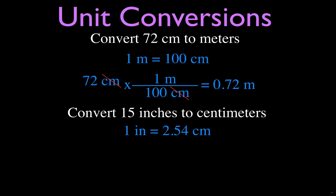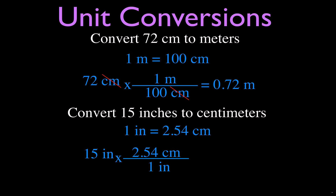Now we're converting between metric and imperial: 15 inches to centimeters. You may need to look this up — one inch equals 2.54 centimeters. Write down what you're given: 15 inches. Put inches on the bottom, centimeters on top. Multiply 15 times 2.54 and you get 38.1 centimeters. Same process every time.